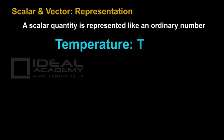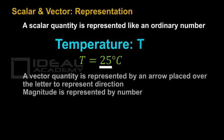For example, temperature is a scalar quantity represented by the letter T. If we say T equals 25 degrees Celsius, here 25 is the magnitude — it is just a number, so there is no need to specify any direction. For a vector quantity, there are two things associated: magnitude and direction.